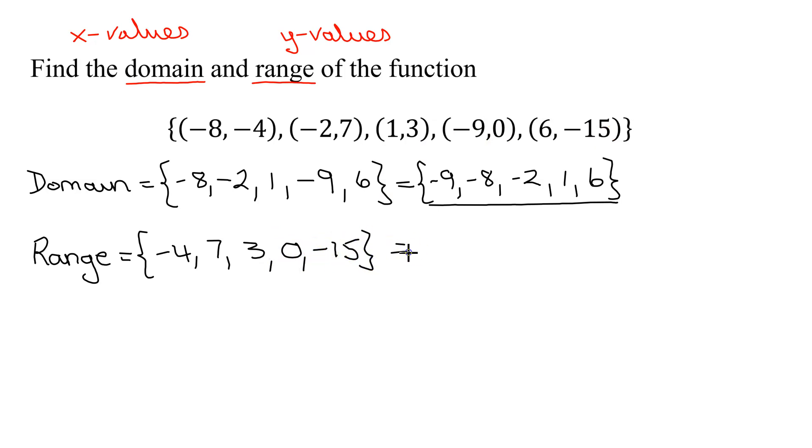So now all I have to do is order them from least to greatest. So my smallest number is negative 15. Next is negative 4, then 0, then 3, and finally 7. So that is the range for this function.